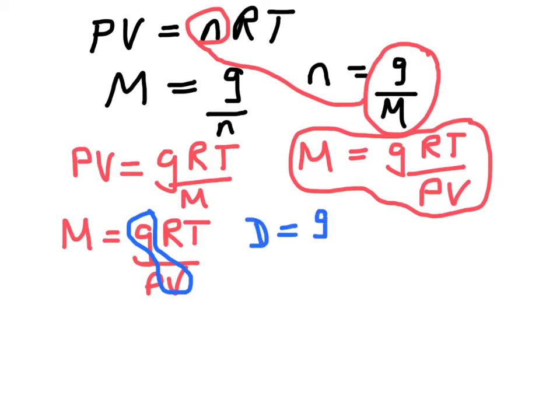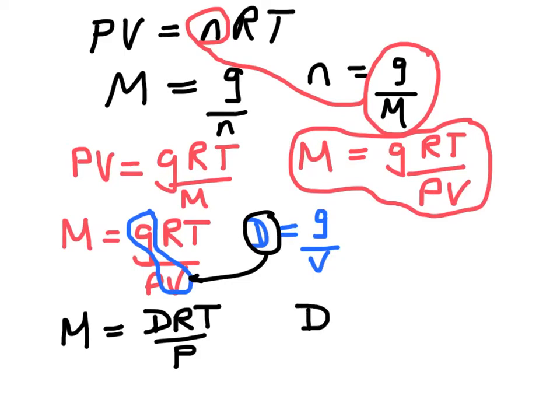Density is mass over volume. So what we're going to do is we're going to go ahead and plug density in for that instead. And we end up with molar mass is DRT over P, which is generally rewritten as density is molar mass times pressure over RT.